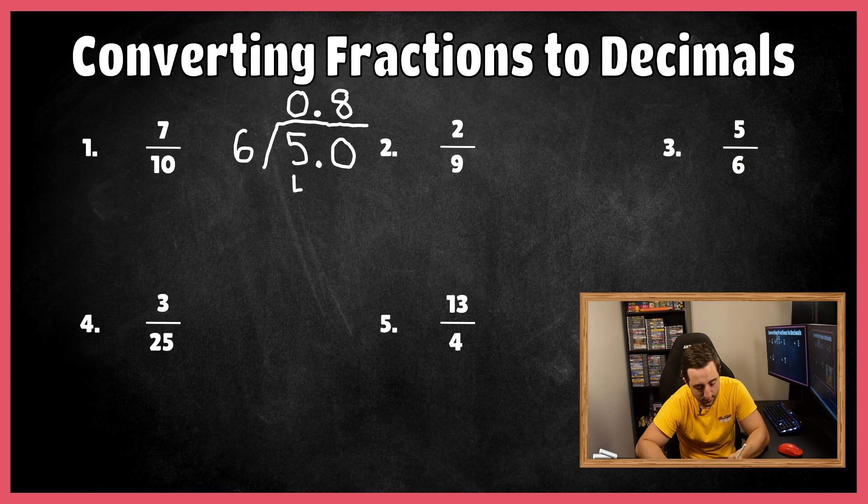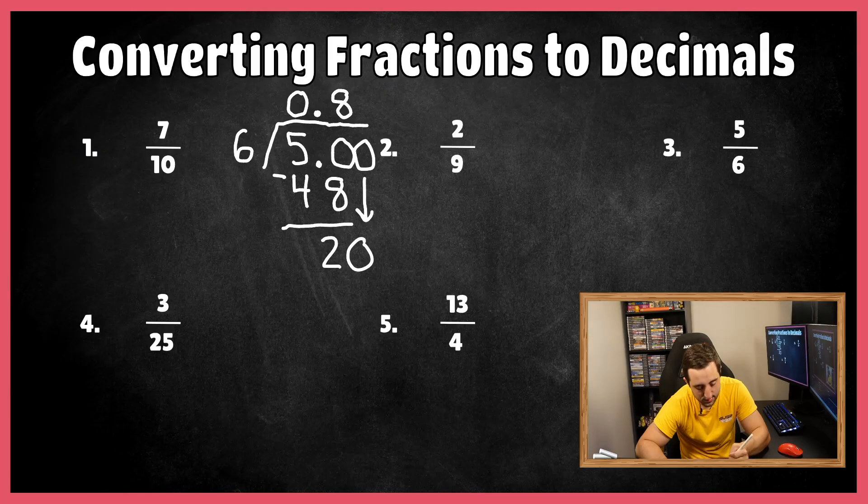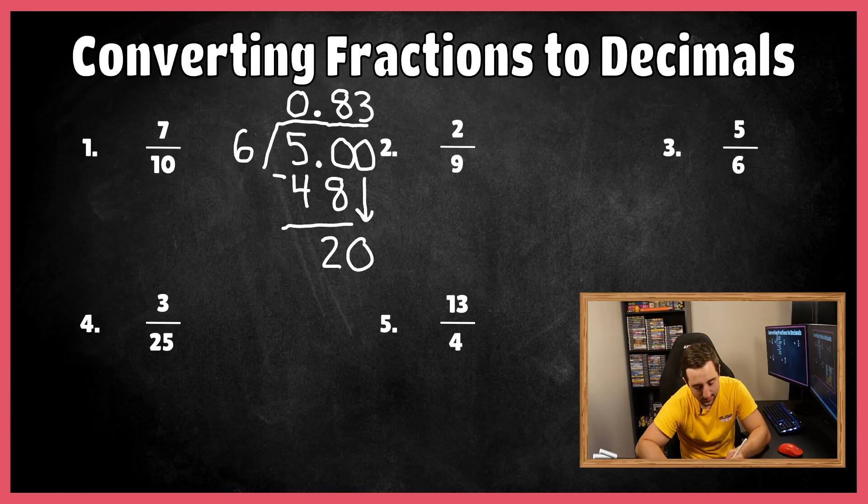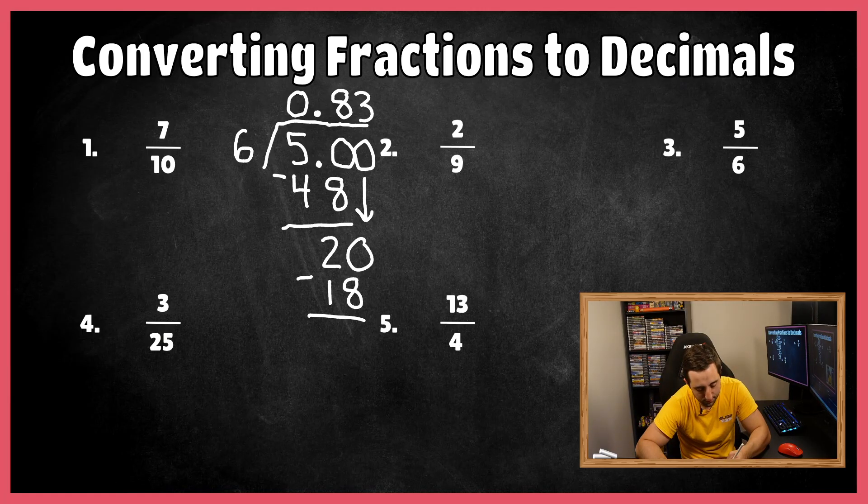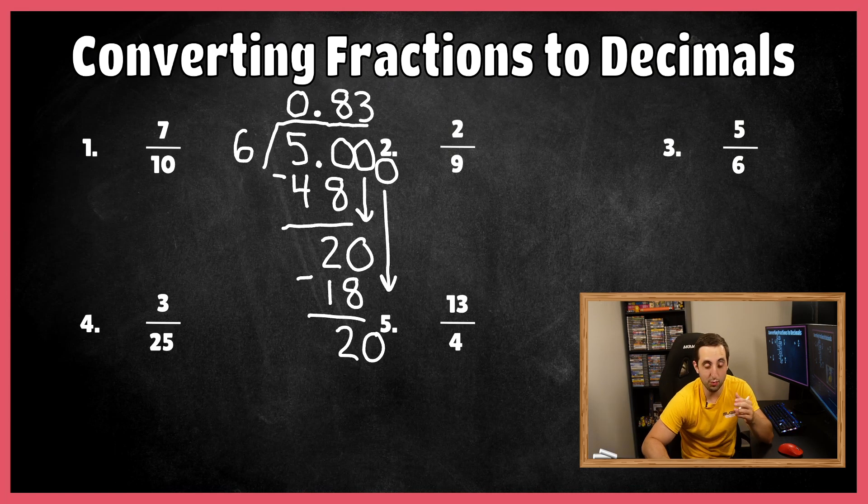So six times eight is 48. We go ahead and subtract here. 50 minus 48 is two. How many times does six go into two? Well, it doesn't. Let's annex a zero and bring that down. Six goes into 20 how many times? That's going to be three. Six times three is 18. And we get a remainder of two. How many times does six go into two? It doesn't. Well, annex a zero, bring that down and we get 20 here. And again, you're going to notice that it's going to keep repeating itself.